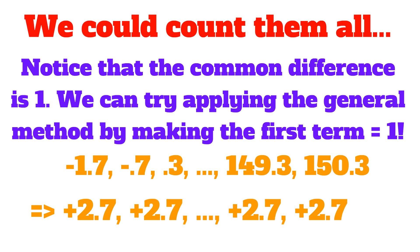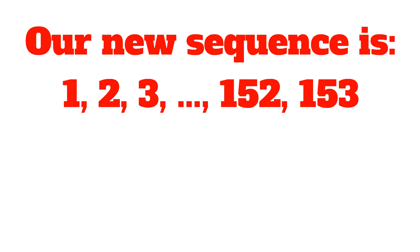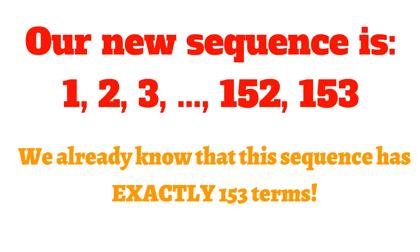We can try applying the general method by making the first term equal 1. If we add 2.7 to each term of this series, we're not changing the total number of terms, we would get a new list. Our new sequence would be 1, 2, 3, all the way to 152, and 153. We already know that this sequence has exactly 153 terms.